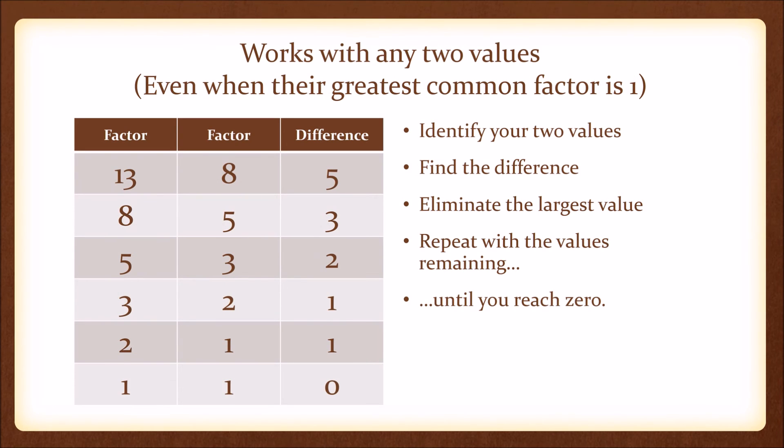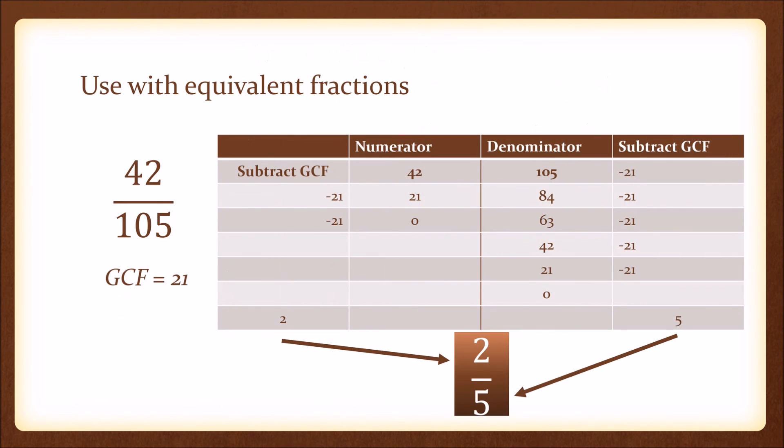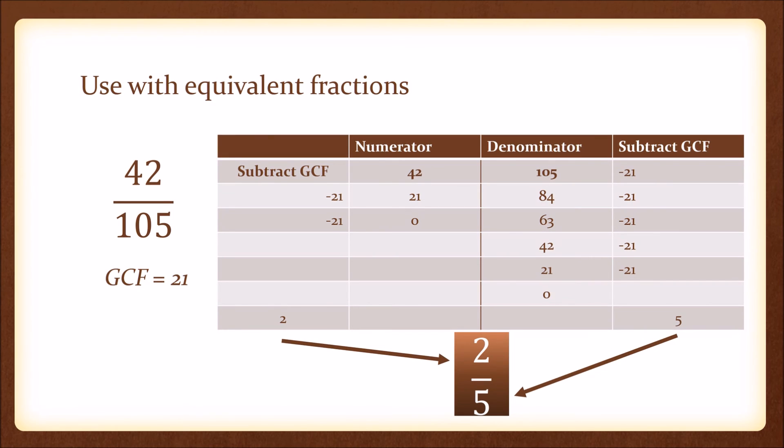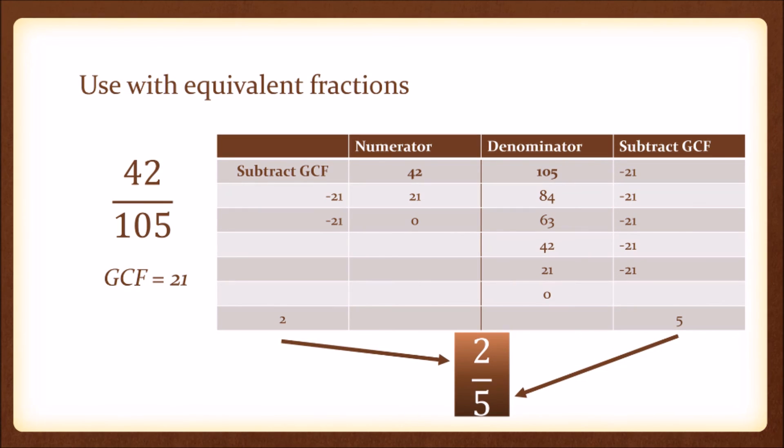This works for any two sets of values, even when they are relatively prime with a fraction that cannot be simplified. You can use this to simplify fractions by finding out how many times you take the GCF away from your numerator and your denominator. In this case, two-fifths.